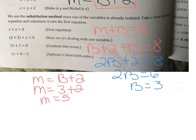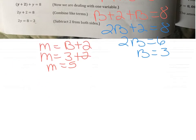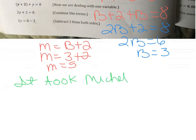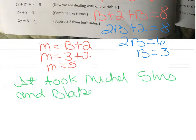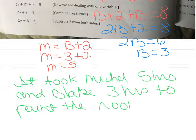Now we find Mitchell's time using M equals B plus two. Substituting B equals three: M equals three plus two, so M equals five. In a complete sentence: it took Mitchell five hours and Blake three hours to paint the rooms.